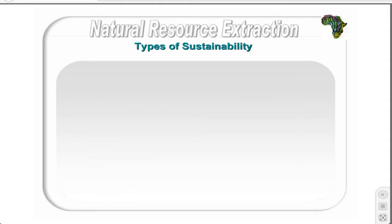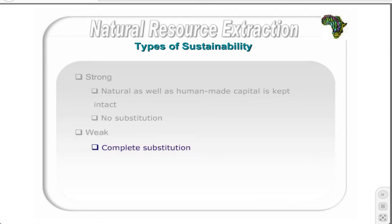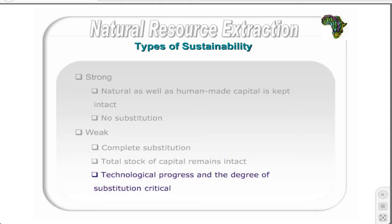Two types of sustainability exist, namely strong and weak sustainability. Strong sustainability rests on the assumption that natural and human-made capital are complementary; thus, the stock of both capitals should remain intact, with no substitution between the two. Weak sustainability assumes that the various types of capitals are completely substitutable; however, the total stock of capital should remain intact, though the proportions of individual capital types may differ over time. Technological progress and the degree of substitution between natural and human-made capital are critical assumptions supporting this type of sustainability.